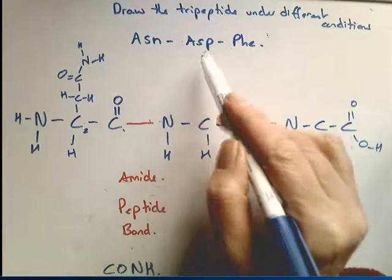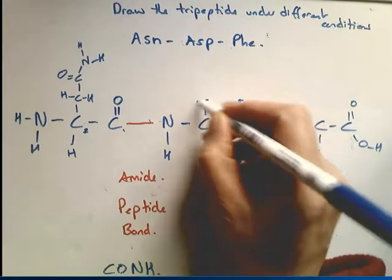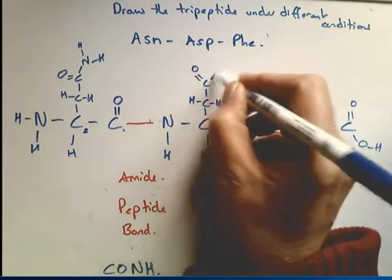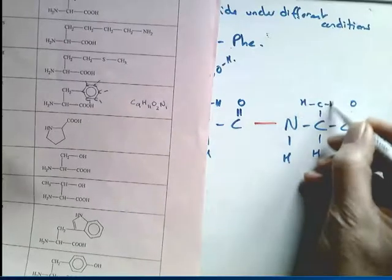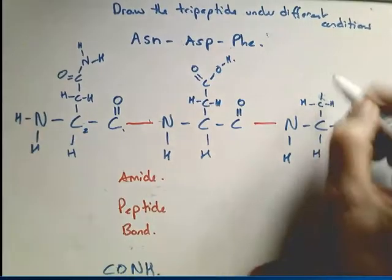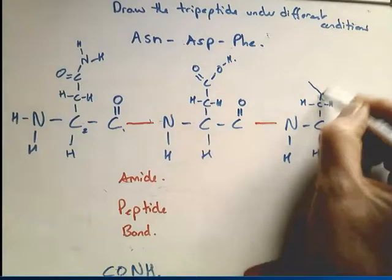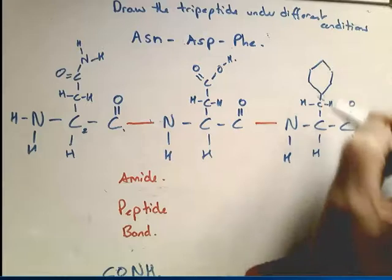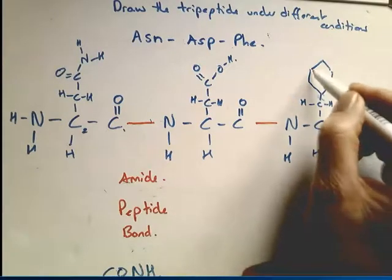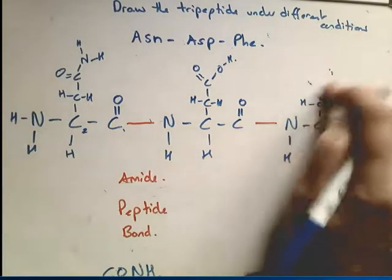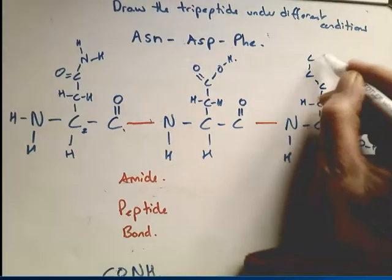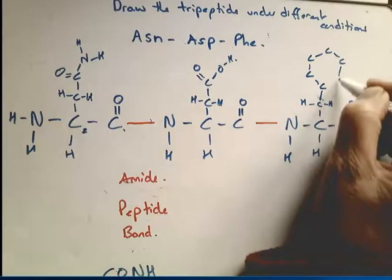Aspartic acid is an acid so it has a carboxyl group as its side chain. Then our phenylalanine — its benzene ring is drawn with each carbon forming triangles: a little triangle straight down to another little triangle, like two triangles in straight lines.